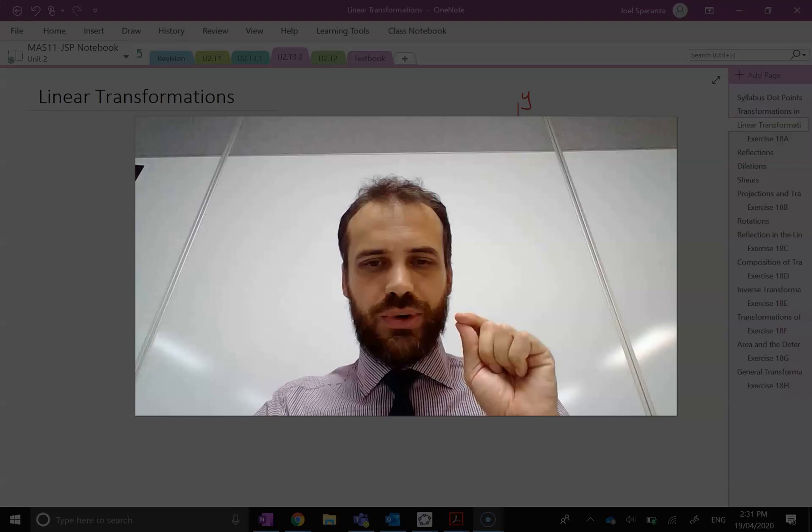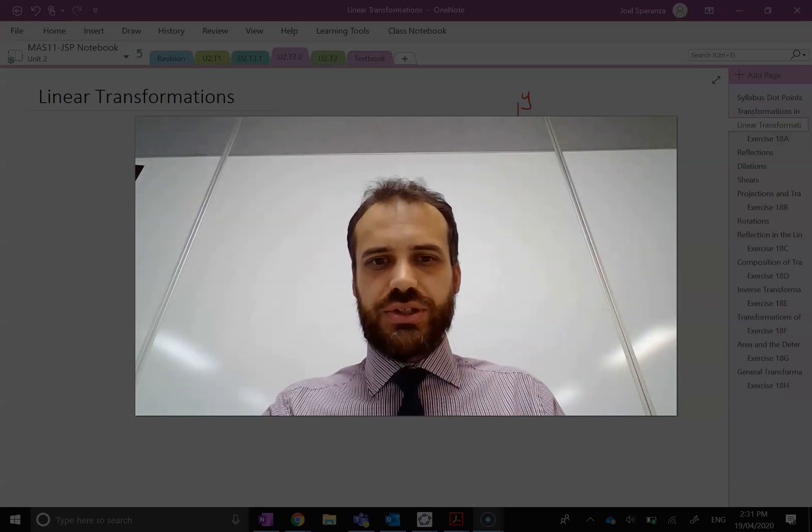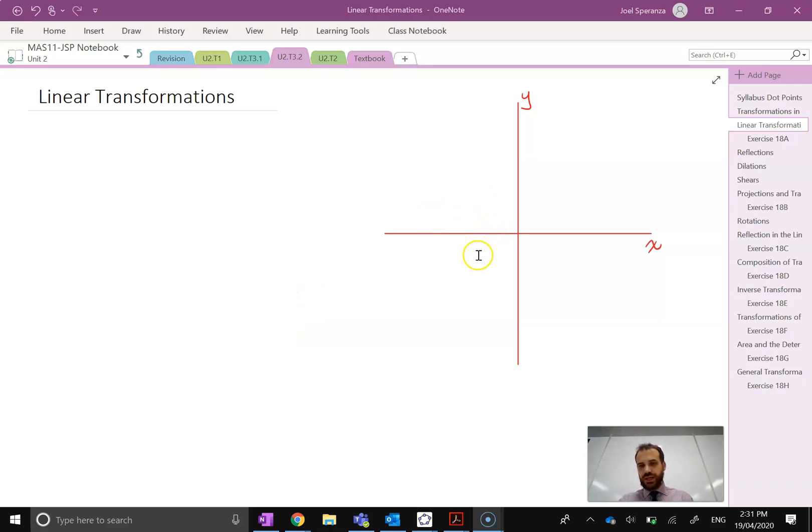So let's come up with a two-dimensional plane first of all. There's our two-dimensional plane, a Cartesian plane with x and y-axis. Now let's put a point on there that we can transform. So there's my point (x,y) and I'm going to transform that point.